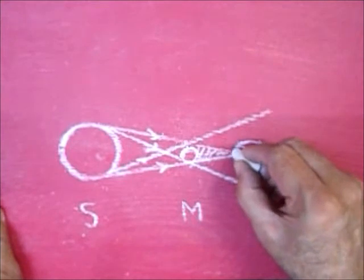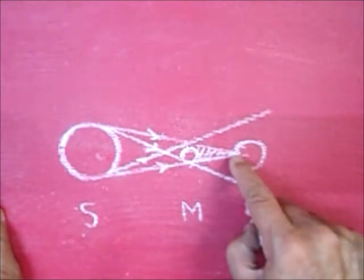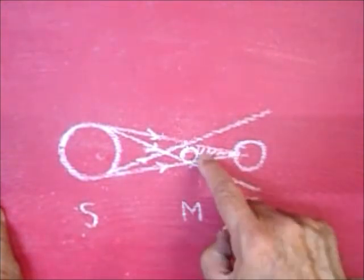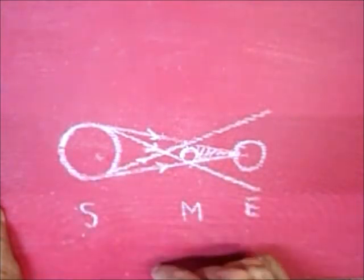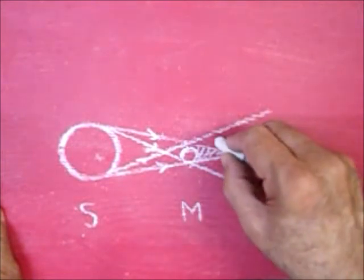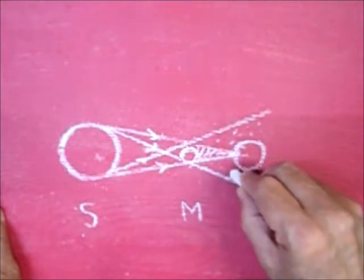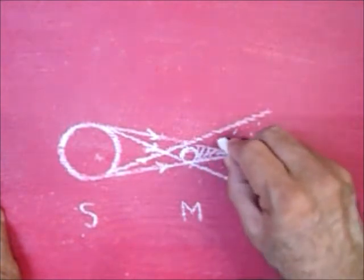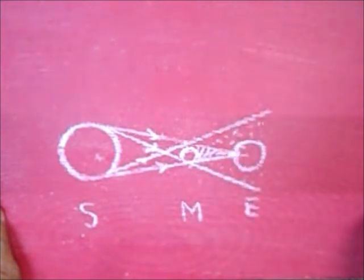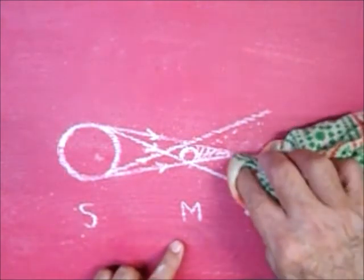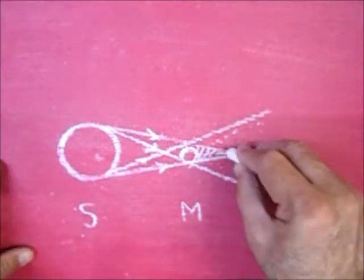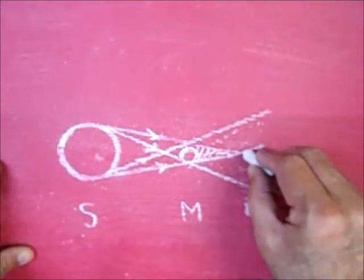People or observers at this place on the Earth will see the Sun as a dark body. This portion will receive partial light and is called the penumbra. Another situation can arise after approximately ten years when the Earth will be slightly farther away, and the rays will go like this.